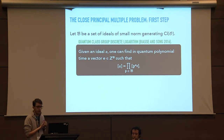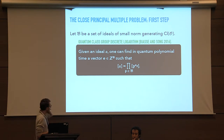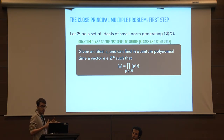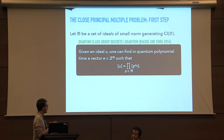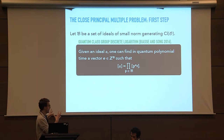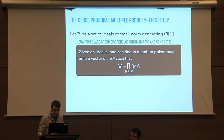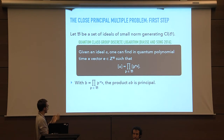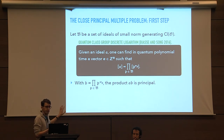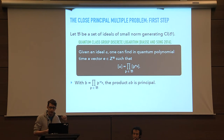The first ingredient of a better solution is that we can solve the discrete logarithm problem in class groups in quantum polynomial time, thanks to a paper by Biasse–Song. If we fix a factor basis B — a set of small ideals that generate the class group — and we are given an ideal A, we can find in polynomial time a decomposition of A as a product of elements in this factor basis. So the class of A in the class group is a product of the classes of elements in the factor base to the power of some integers. We could then write B as the product of those elements with exponents equal to the negatives of the integers we found, so that the product AB is principal.